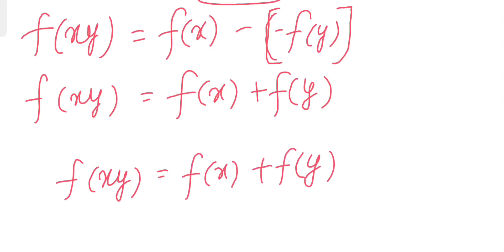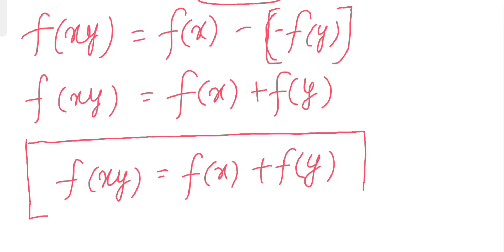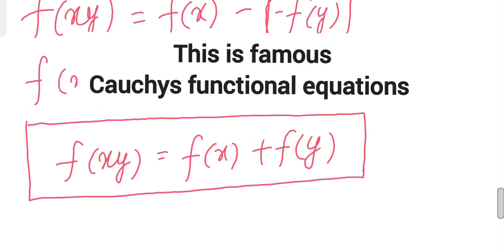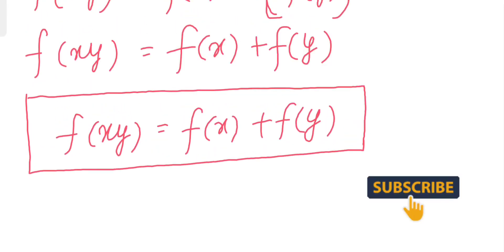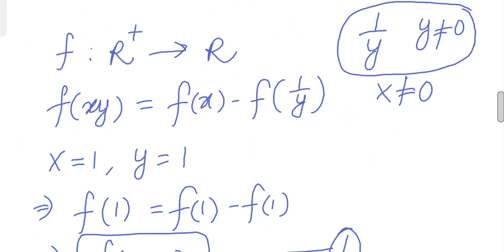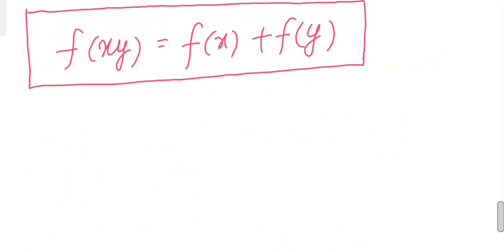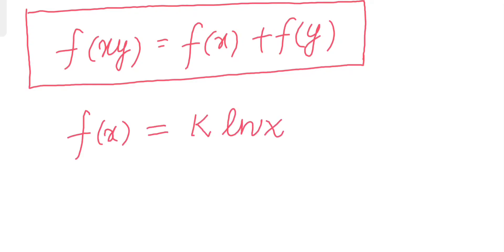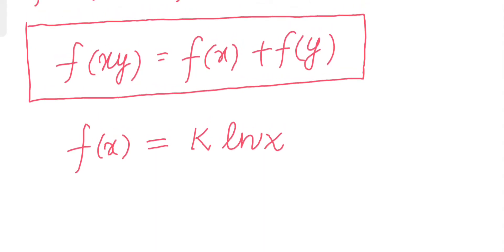This looks familiar — this is the famous Cauchy's functional equation, where f of xy equals f of x plus f of y. This function is continuous and has a specific solution. From Cauchy's functional equation, we know the solution is f of x equals k times ln x. So this is the final solution, and I hope you liked it. This was a very easy and simple one. See you next time, take care, bye.